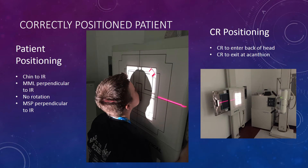Putting all of that together, we have a properly positioned patient with the chin to the IR, the MML perpendicular to the IR, no rotation as checked by palpating the mastoid processes, and the MSP perpendicular to the IR. For CR positioning, we have a horizontal beam perpendicular to and centered to the IR. The CR is to enter the back of the head and to exit at the acanthion.